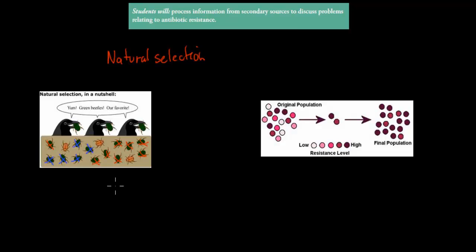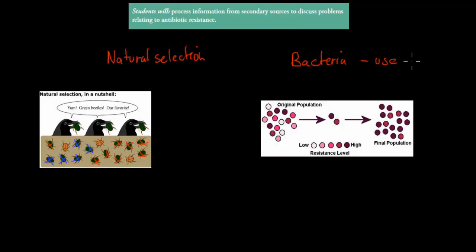That's natural selection in general, but natural selection can also be used when it comes to bacteria, especially when it comes to bacteria and the use of antibiotics. What do antibiotics do? Well, antibiotics kill bacteria — that's what their function is.